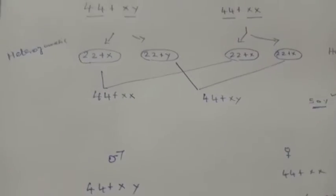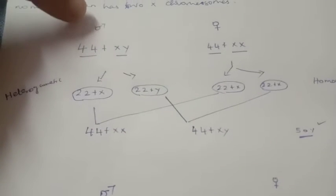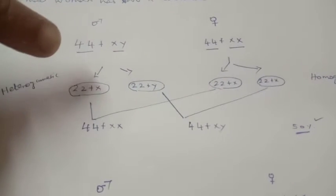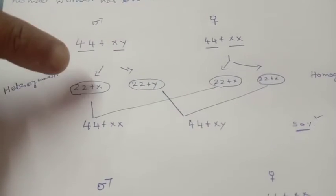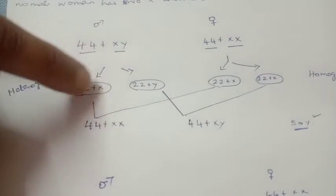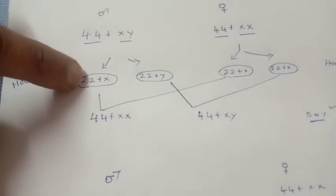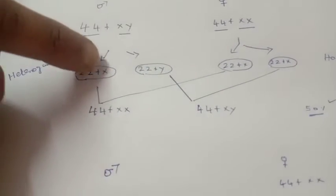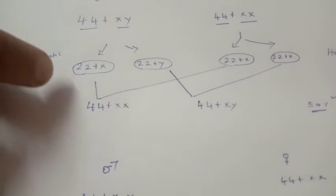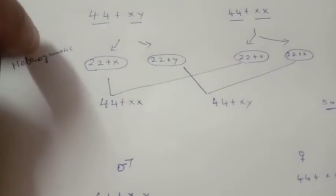How are they formed? Actually, at the time of meiosis in males, two dissimilar gametes are formed, namely 22 plus X and 22 plus Y. So males are known as heterogametic individuals.